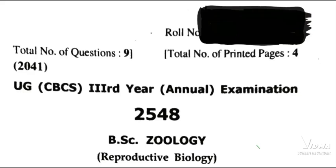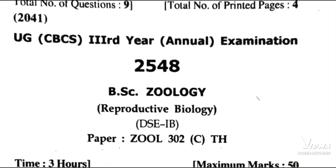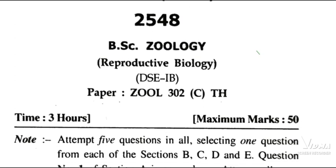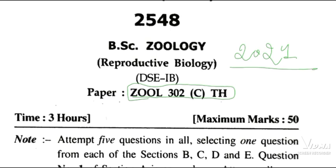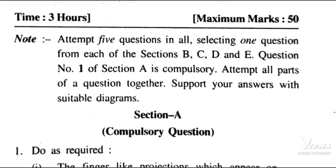Hello guys and welcome back to my YouTube channel. Today we are going to discuss BSC 3rd year Cardiology question paper — Reproductive Biology DSC 1B, paper code ZOOL302CTH. This is the 2020-21 question paper. Maximum marks 50, time 3 hours. The note says: attempt 5 questions in all, selecting one question from each section. Question number 1 of Section A is compulsory. Attempt all parts of the question together and support your answer with a suitable diagram wherever possible.